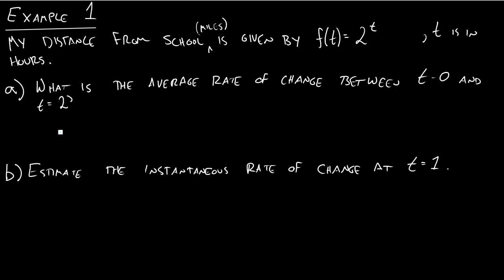For this problem, we can just use our formula. So we want to do f(2) minus f(0) divided by 2 minus 0. We really want to pay attention to the units here. This would be 2², which is 4, and 2⁰, which is 1, divided by 2.